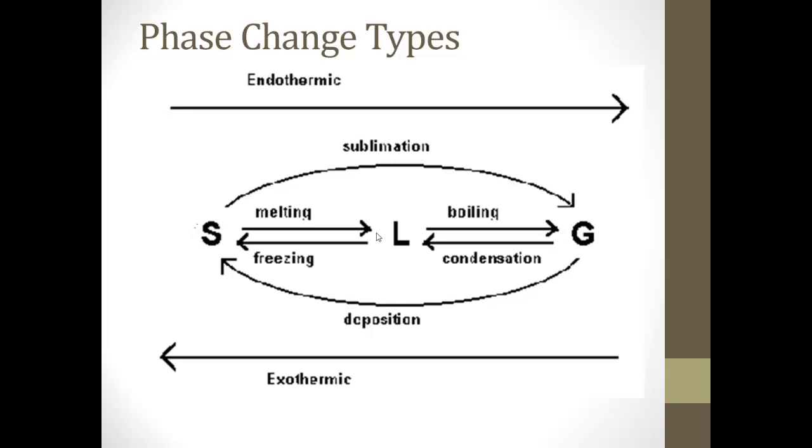So here we have S for solid, L for liquid, and G for gas. And the most common example that I always like to think of is good ol' H2O. So water is a solid as ice, and when that solid becomes a liquid, we call it melting. When that liquid becomes a gas, we call it boiling, or vaporization. The liquid is becoming a vapor.